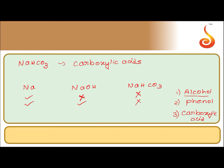Phenol reacts with sodium and liberates hydrogen gas, reacts with sodium hydroxide to form sodium phenoxide and water, but will not react with sodium bicarbonate because it is a weak acid compared to carboxylic acids. Carboxylic acids, being strong acids, react with sodium, sodium hydroxide, and sodium bicarbonate, liberating carbon dioxide and giving brisk effervescence.